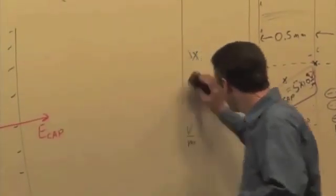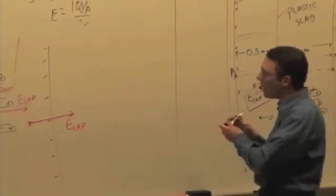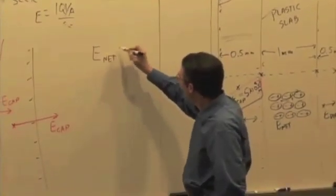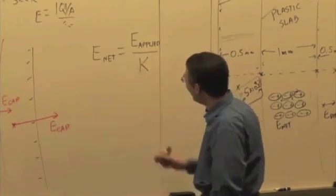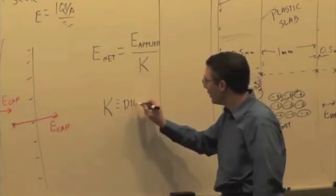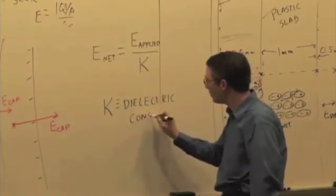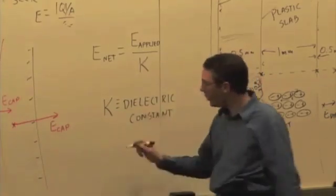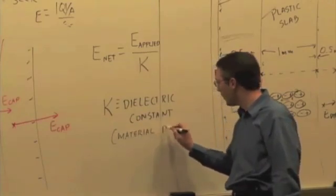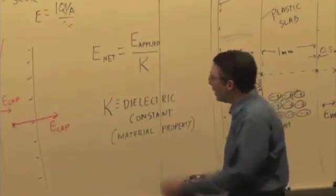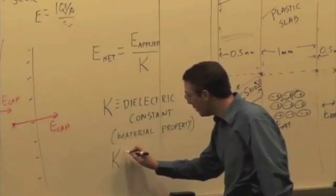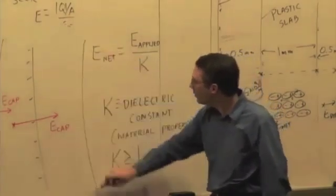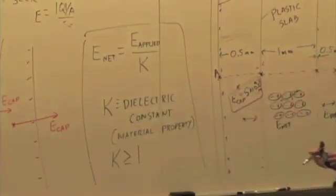There's actually a relationship, experimental relationship, empirical relationship, that tells us how much that E net is. And that E net inside is equal to the electric field, and I'll call it the applied electric field, which is the field due to the capacitor in this case, divided by a constant K. This capital K is called the dielectric constant. And it's a property of a material, so it's a material property. And for most ordinary materials, there are lots of exceptions to this, but K is typically greater than or equal to one. So if I have a number greater than one, I'm dividing by a number greater than one, my electric field has gone down. It's less than the original applied field.